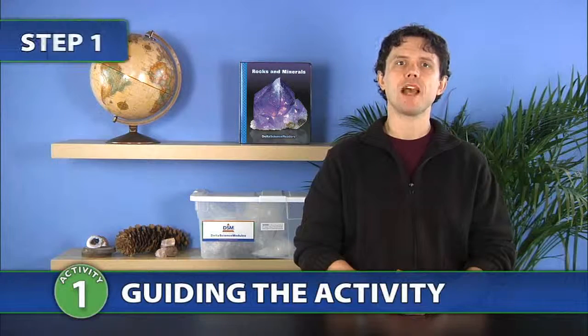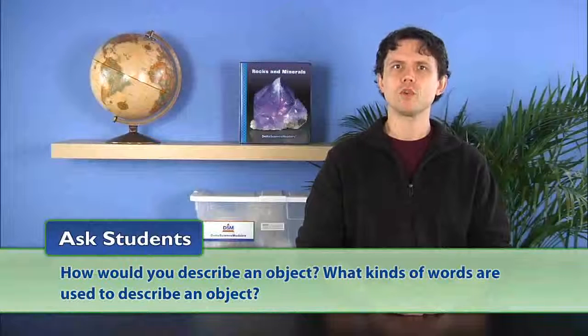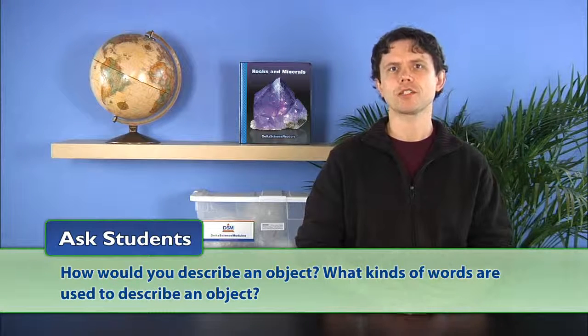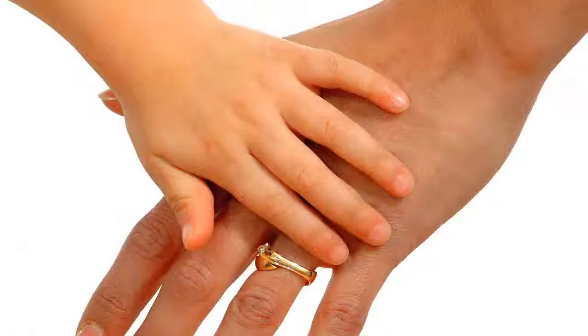To begin the activity, ask students: how would you describe an object? What kinds of words are used to describe an object? Students should mention that people use their senses of sight, smell, taste, touch, and hearing to describe different properties of an object.